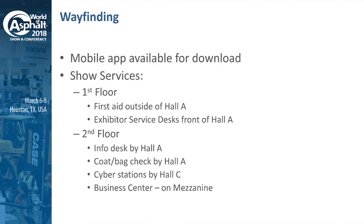For wayfinding, go ahead and download the app right now by searching for World of Asphalt — there's a lot of good information on there including maps of the show floor, location of services, and other helpful information. On the first floor, outside Hall A is first aid, and the exhibitor service desk is also inside the front of Hall A. On the second floor, there's an info stand right upstairs in Hall A, that's where coat and bag check is. There are also a couple of cyber stations in front of Hall C and a business center.